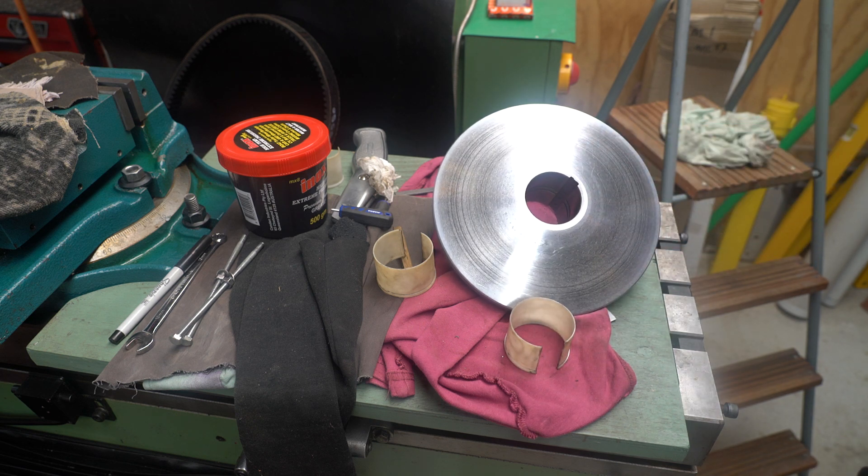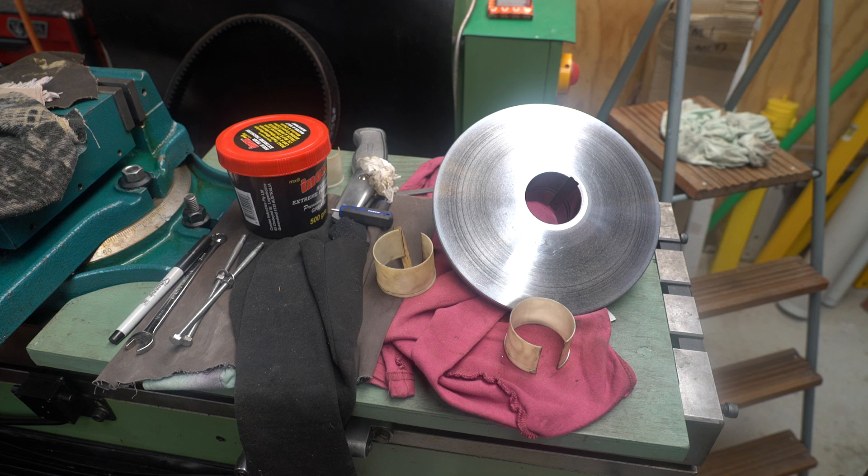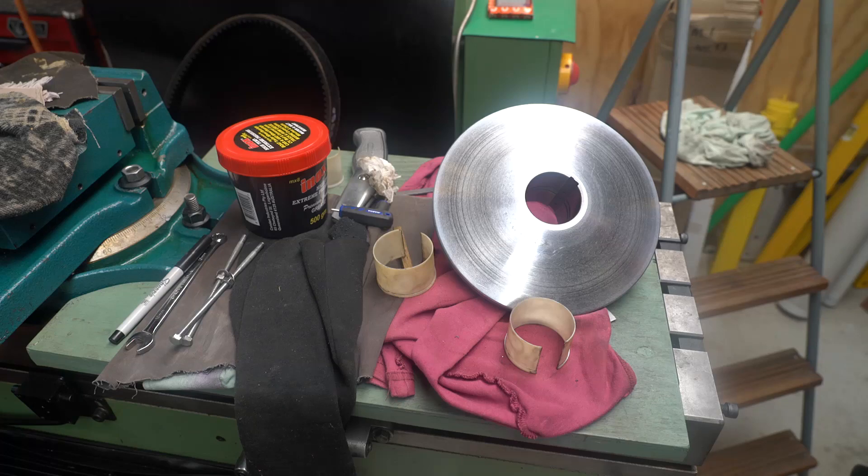This is a very common problem with most variable speed turret mills, and unless you can buy spare parts for your mill, you will need to make replacements yourself. The good news is that despite the thin wall, they are relatively easy to make.